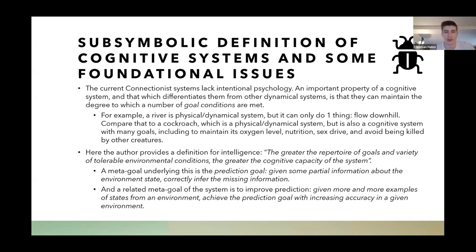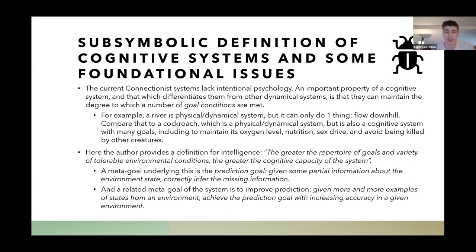Foundational issues: current connectionist systems lack intentional psychology. An important property differentiating cognitive systems from other dynamical systems is that they can maintain the degree to which a number of goal conditions are met. A river is a physical system that can only do one thing — flow downhill. But a cockroach is also a physical system that's cognitive because it has many goals: it must maintain its oxygen level, nutrition, sex drive, and avoid being killed by other animals. The author provides his definition for intelligence based on goals.